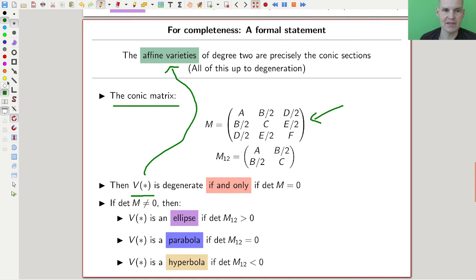So the zero set of star is the equation. So that guy is degenerate if and only if, very easy to check, the determinant of the matrix is zero. Easy to check. So let's say it's not zero. Let's talk about the degenerate cases in a second. Then you look at this top corner matrix here. The matrix M12, if you want the top corner matrix.